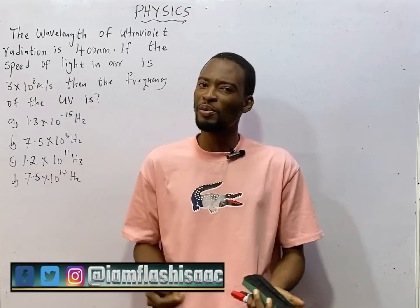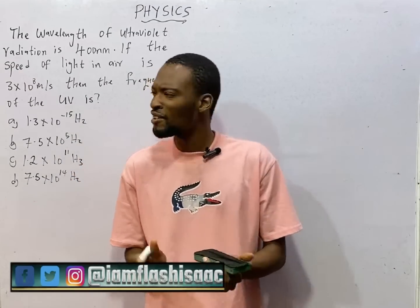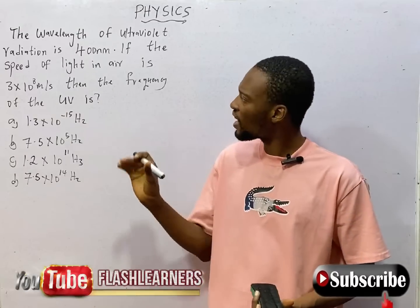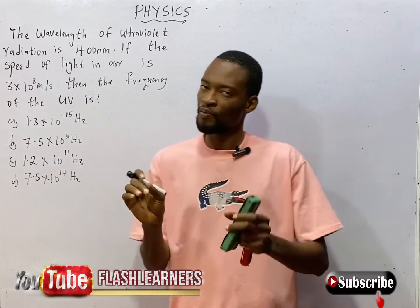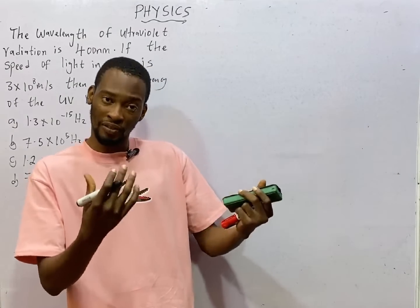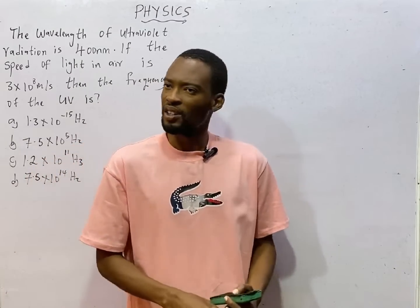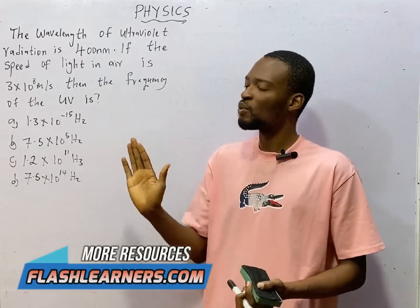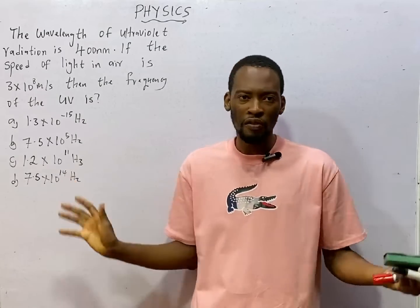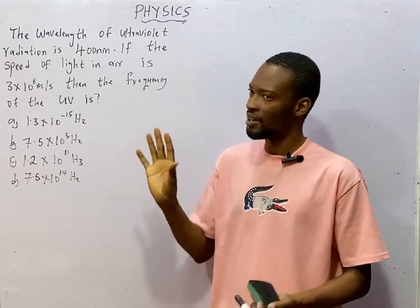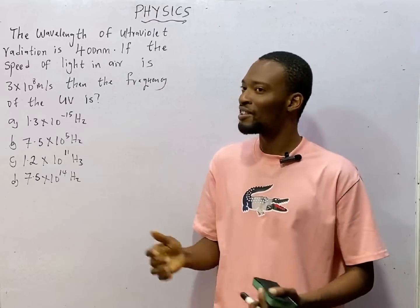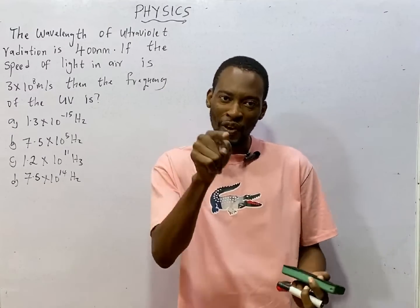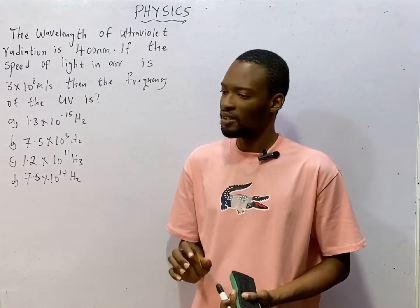Hello, you are welcome to episode number 53 of the 120 Days to JAMB Physics with Flash Isaac. In this episode, we shall be looking at 4 to 5 questions under light waves. Your duty after every episode is to open the Flash Learners JAMB application, go to the topic — in this case, light waves — and you will see all JAMB past likely questions under light waves with explanations. The app features a lot of resources to make you blast JAMB. With the videos and the apps, if you don't score above 300 in JAMB, then it is the duty of your village people. Visit flashlearners.com right now or go to your app store to install the application.